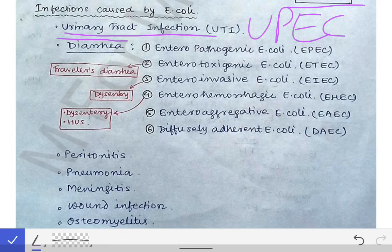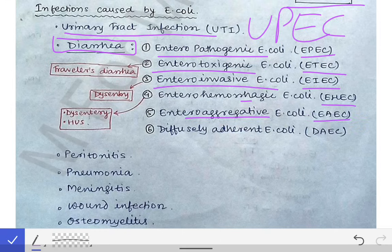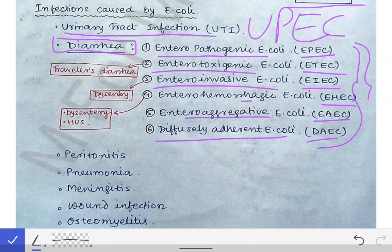Diarrhea is caused by many E. coli types, and there are several pathotypes of E. coli which cause diarrhea. Those pathotypes are: enteropathogenic E. coli (EPEC), enterotoxigenic E. coli (ETEC), enteroinvasive E. coli (EIEC), enterohemorrhagic E. coli (EHEC), enteroaggregative E. coli (EAEC), and diffusely adherent E. coli (DAEC). These are the six pathotypes of diarrheogenic E. coli.